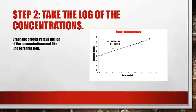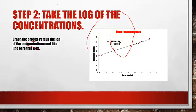To transform the sigmoid curve to a straight line, first transform your concentration to log concentration. Then make a graph of probit versus log concentration to get the straight line equation y = mx + a, where m is the slope and a is the y-intercept. You can then use this equation for calculating LC50 and related values.